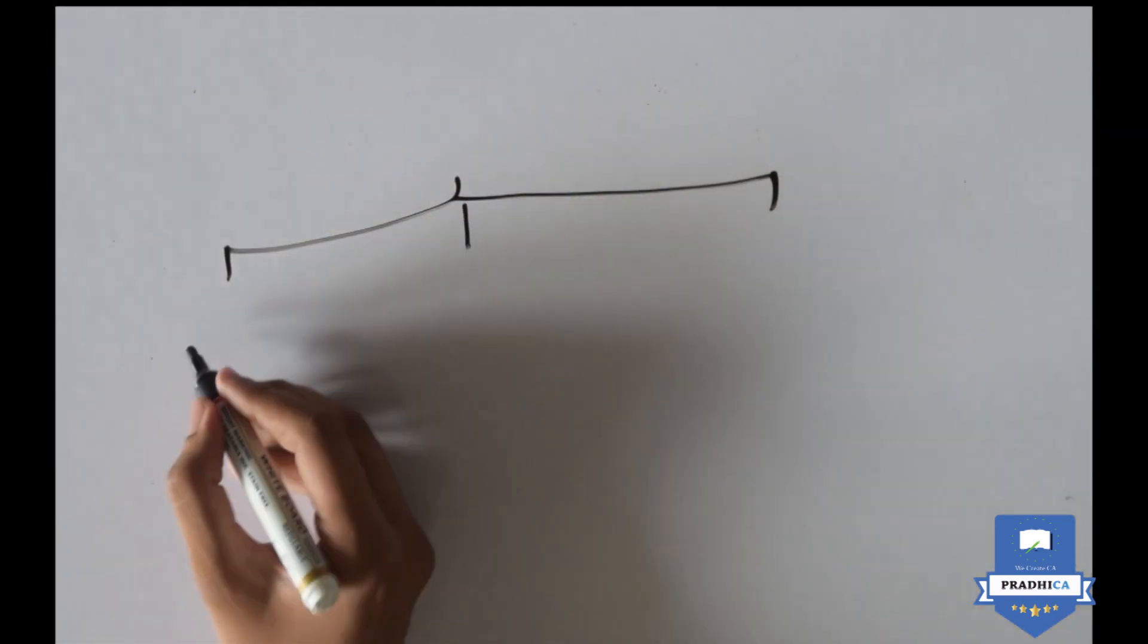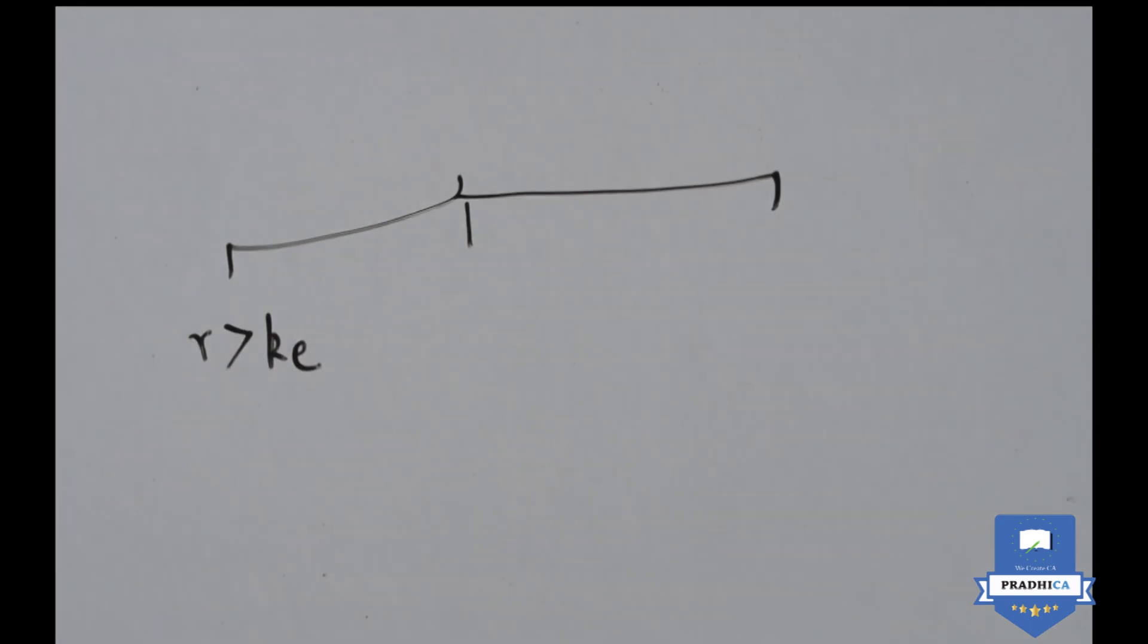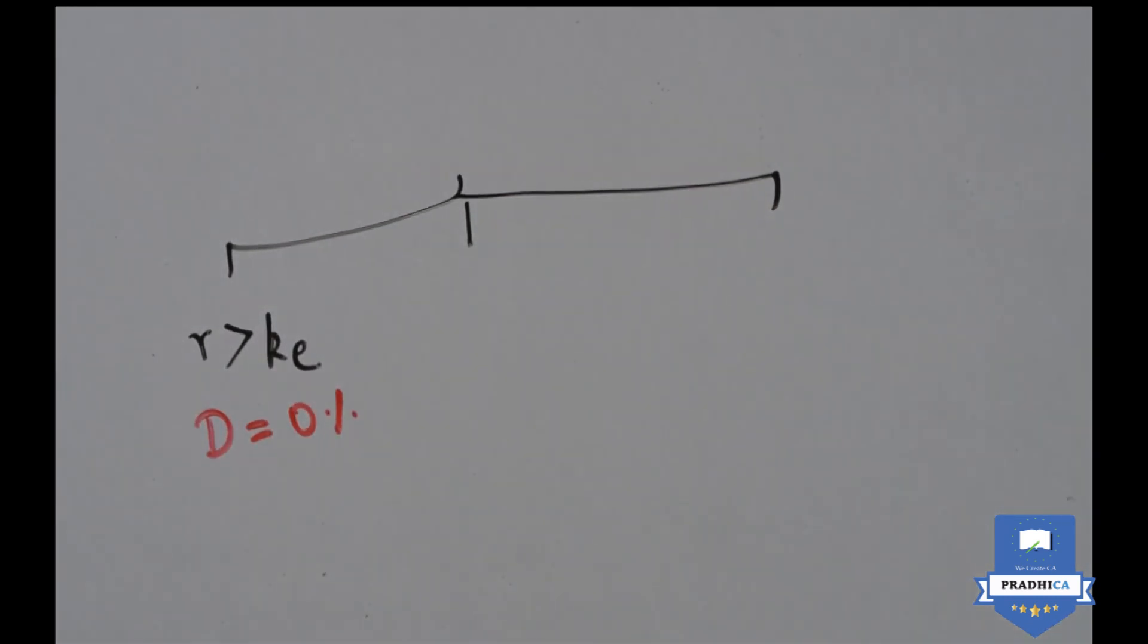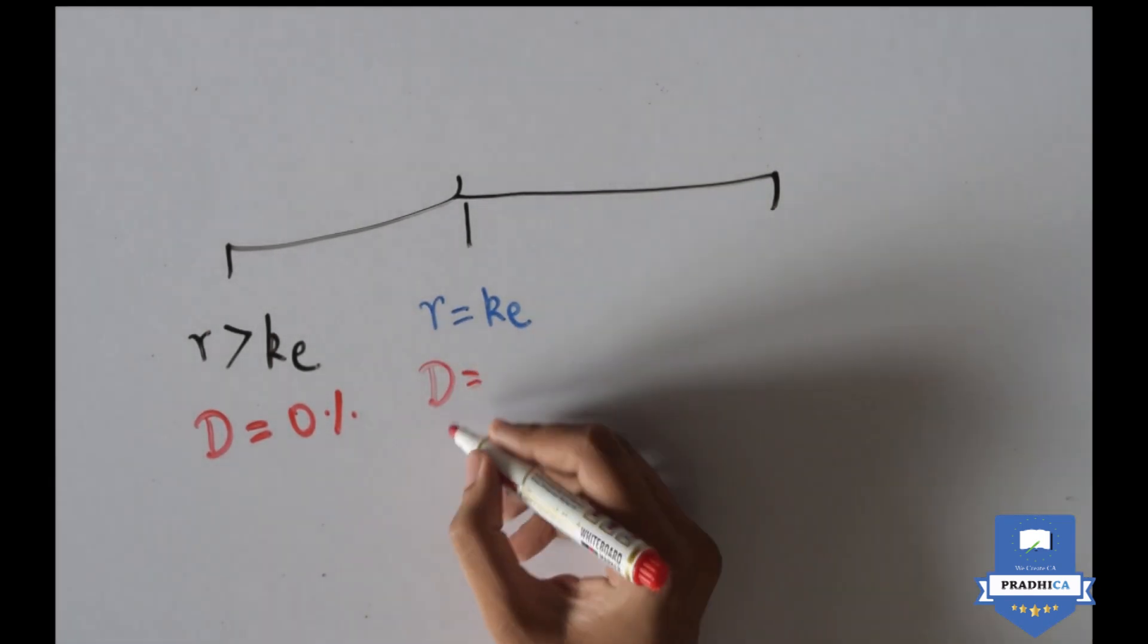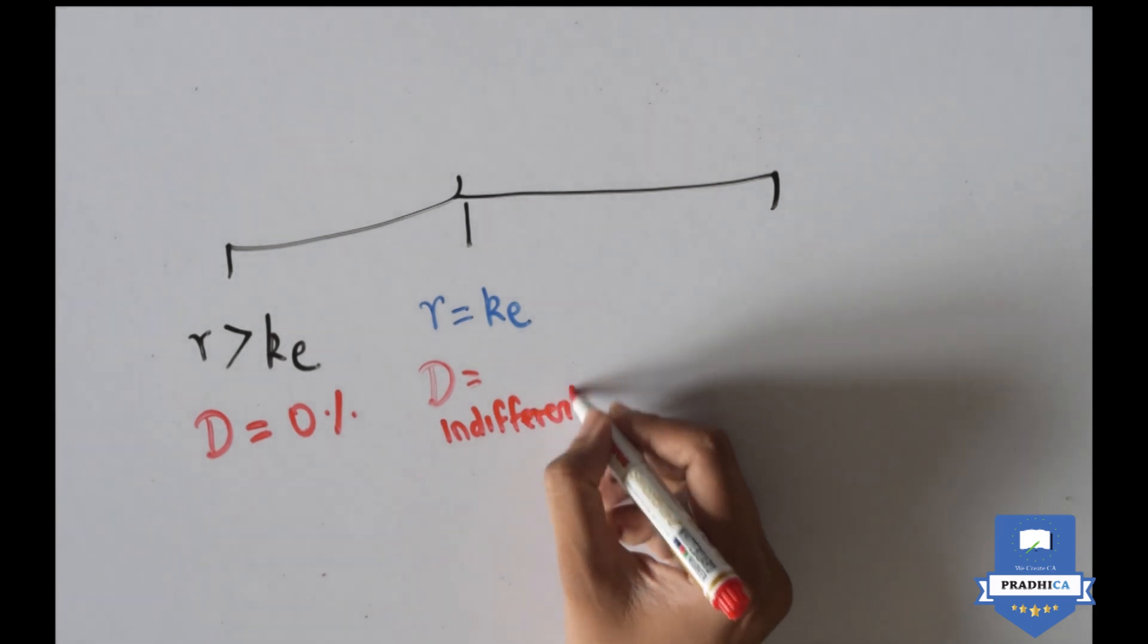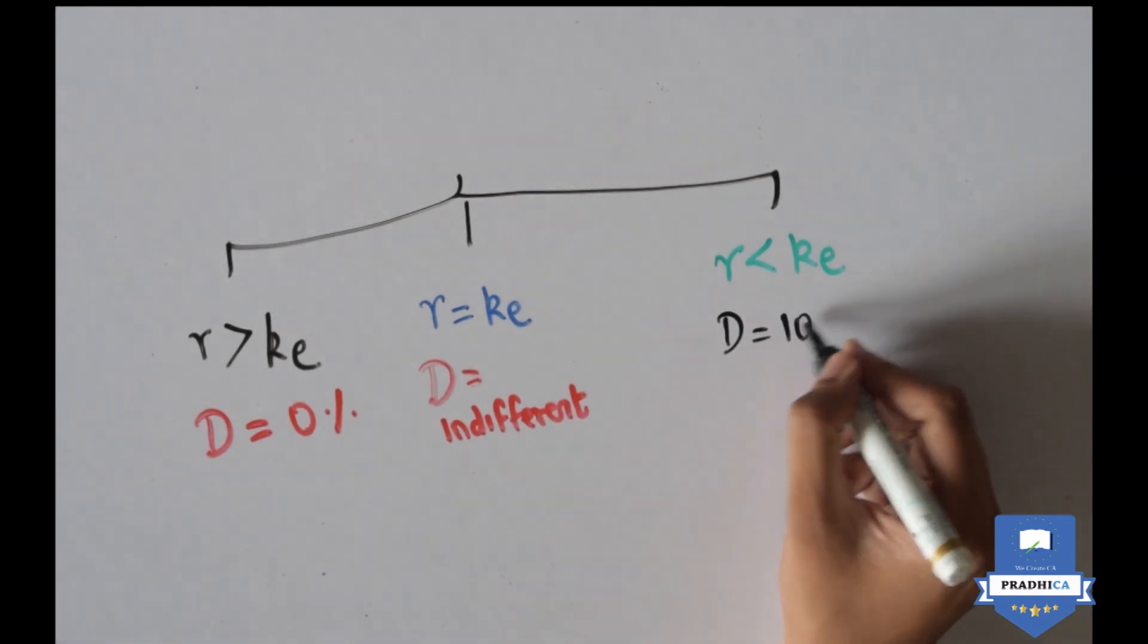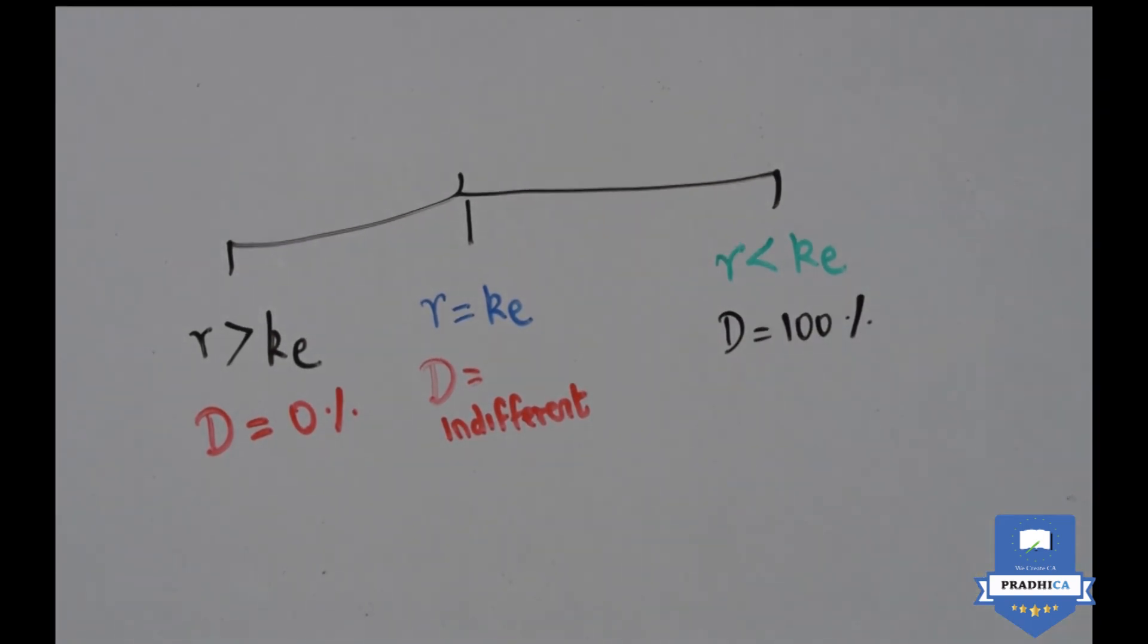Walter says that when the rate of return of projects exceeds the cost of equity, no dividend should be paid. When the rate is equal to the cost of equity, the dividends are an indifferent decision. And where the rate is less than the cost of equity, it is better to pay out 100%, because retaining is not giving any benefit to the shareholders.